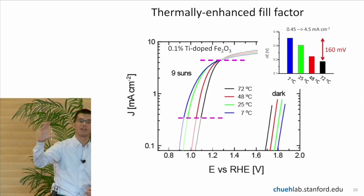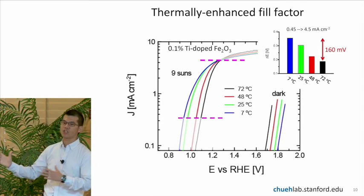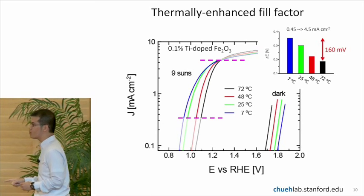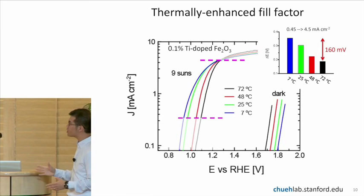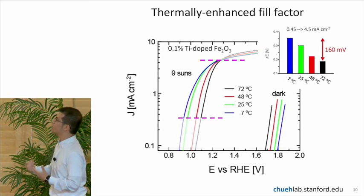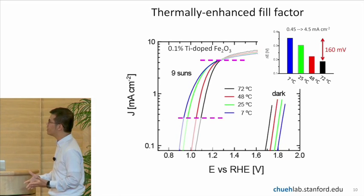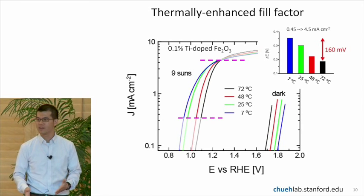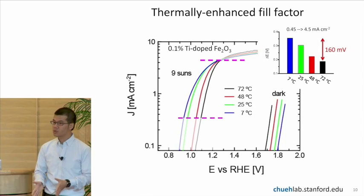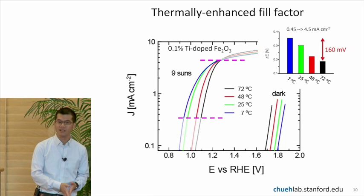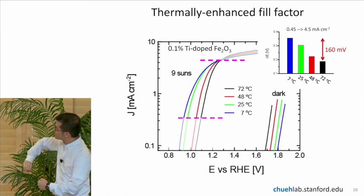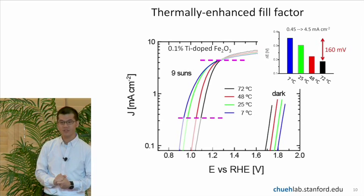But in the case of 72 degrees C, you only need about 200 millivolt. And the difference is about 160 millivolt. So in the previous slide, I showed you how the onset potential, so when the currents start to take off. This plot is showing you how high current behaves. And this is actually where it matters because we will not want to operate our cell at very low current. So this tells you by increasing the fill factor with thermal activation, you're able to achieve higher current with less applied potential. And the reason for this, we have shown, is due to the increased,